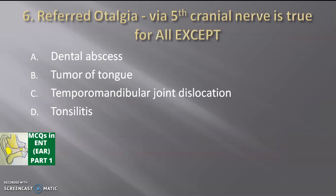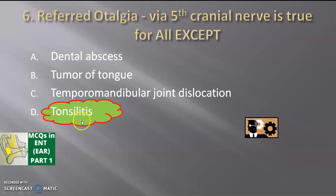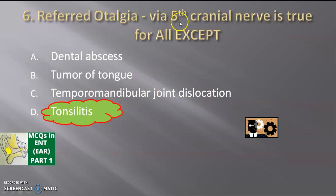Next, referred otalgia via the fifth cranial nerve is true for all except — dental abscess, tumor of the tongue, temporomandibular joint dislocation, or tonsillitis? Tonsillitis is the answer, because tonsils are supplied by the ninth cranial nerve (glossopharyngeal). Dental pain is via maxillary and mandibular divisions of trigeminal nerve, tongue tumors by trigeminal nerve, and the TMJ by the auriculotemporal nerve, also a branch of trigeminal.